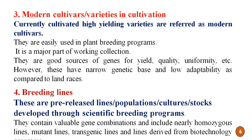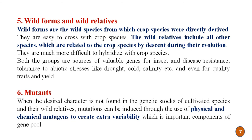The fourth type is breeding lines — pre-release lines, populations, cultures, and stocks developed through scientific breeding programs. They contain valuable gene combinations and include nearly homozygous lines, mutant lines, transgenic lines, and lines derived from biotechnology programs. The fifth type is wild forms and wild relatives. Wild forms are the wild species from which crop species were directly derived. Wild relatives include all other species related to a particular crop species by descent during evolution. Both are easily crossed with the crop species as their ancestry is common.